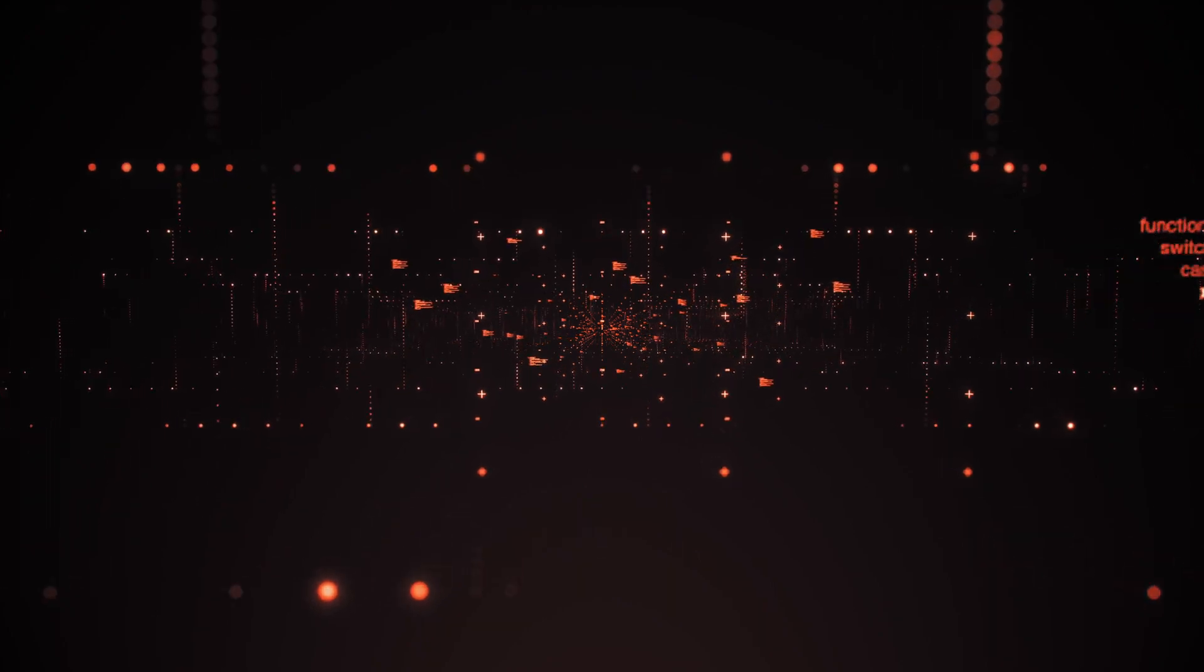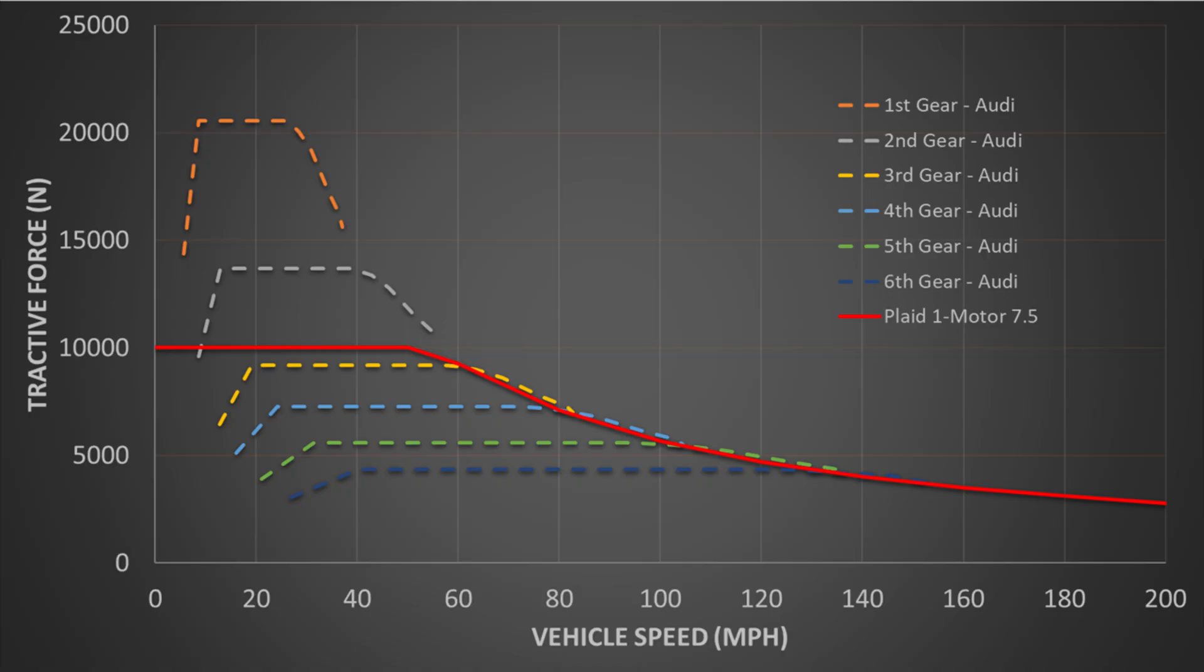Then we will calculate the curve for the single Plaid motor with the factory 7.5 to 1 gear ratio. See it achieves peak tractive force of around 10,000 newtons, but continues holding peak power all the way up to 200 miles per hour, and maybe more.